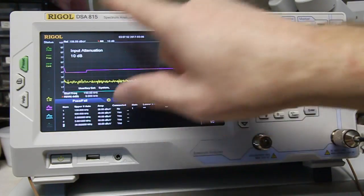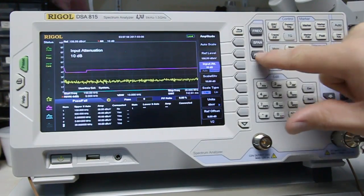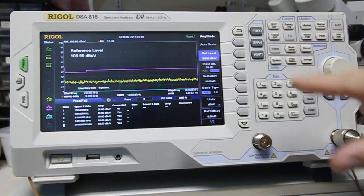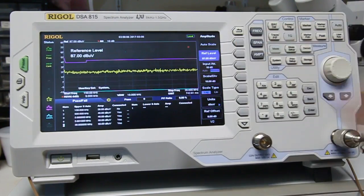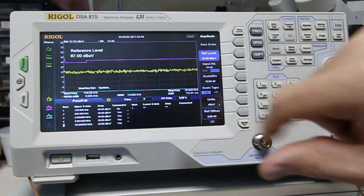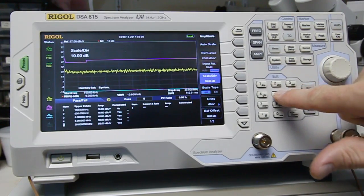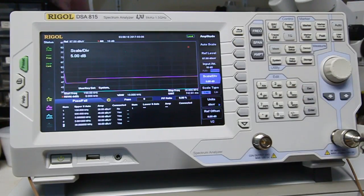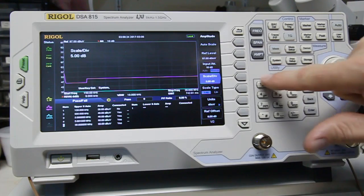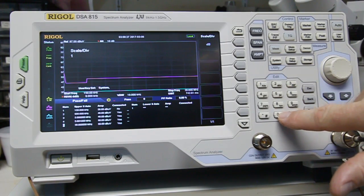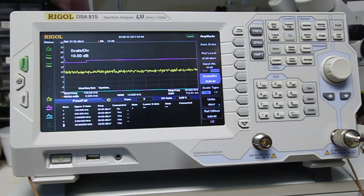Now, to get a little bit better range here, I'm going to change the reference level to something a little lower. I'm going to go to, say, 87 dB microvolts. And I'm going to do 5 dB per division. Oh, that was too much. So let's go back to 10 dB. That should work.